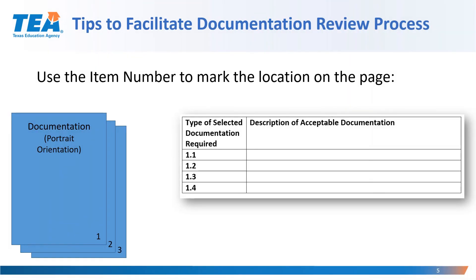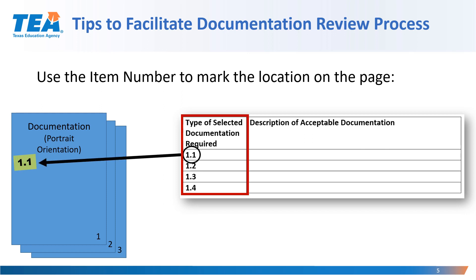Another tip for facilitating the documentation review process includes using the item number that is listed in the handbook section for documentation and marking the location on the documentation page that is submitted. For example, you would look for item 1.1, identify what is requested of 1.1, and then mark it on the actual documentation that is submitted as 1.1.